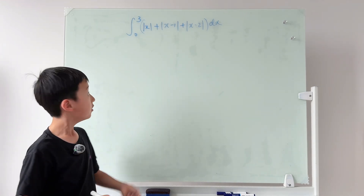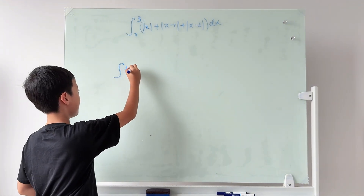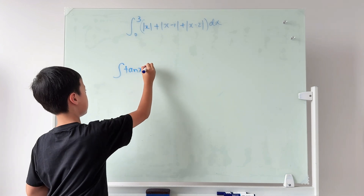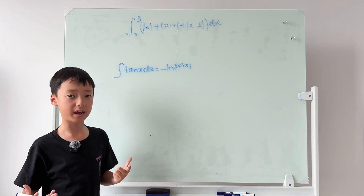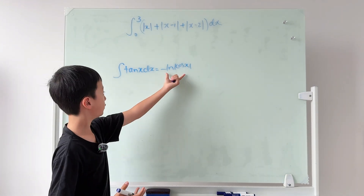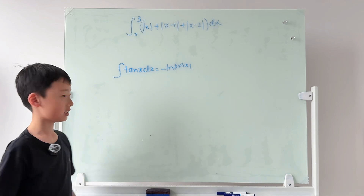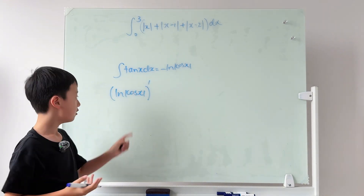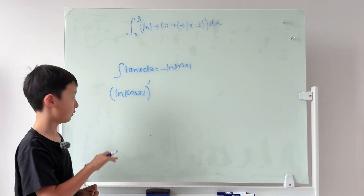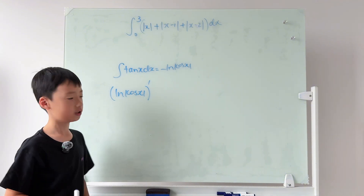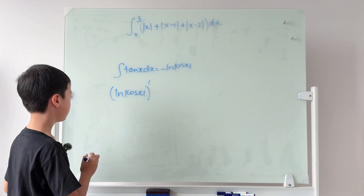Now for a bonus question related to this integral. As you should know, the integral of tan x dx equals negative ln|cos x|. But have you ever verified this by taking the derivative? We need to find the derivative of |cos x|, and for that we need the general formula for the derivative of |f(x)|.